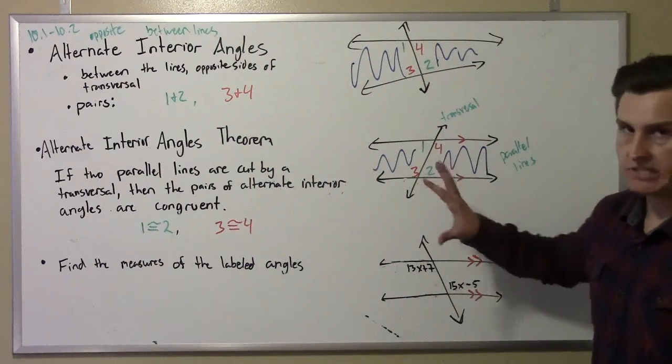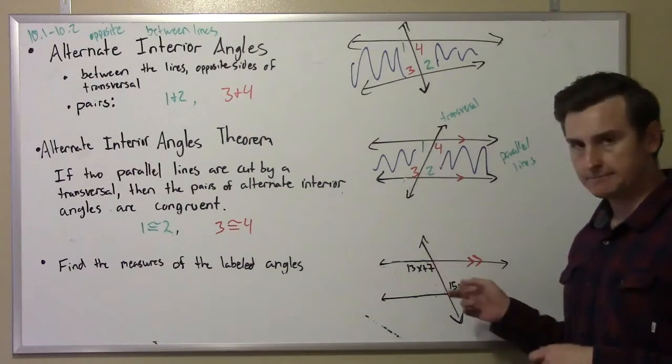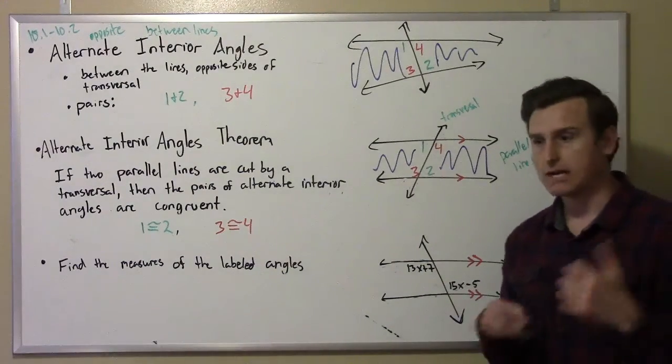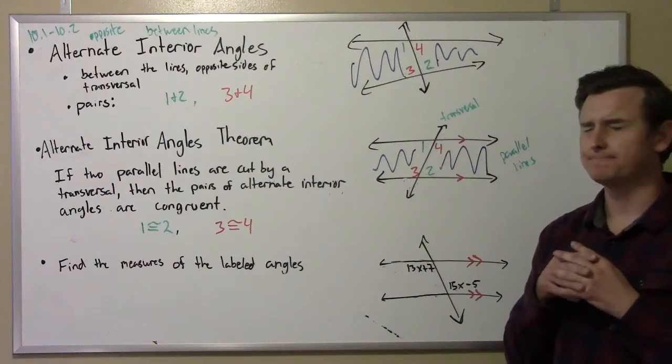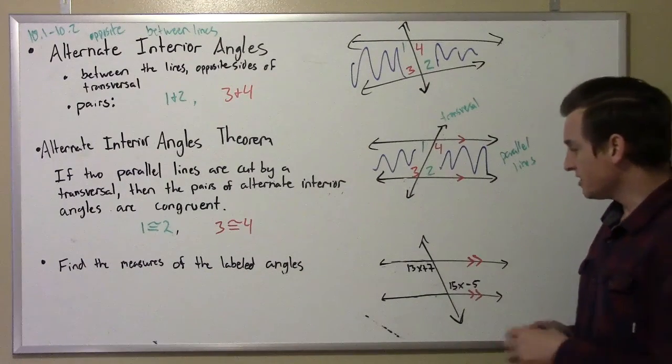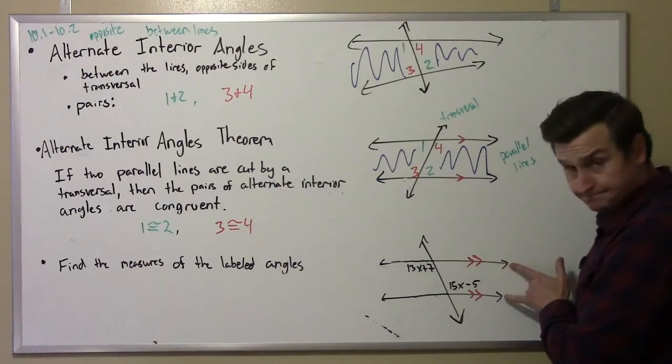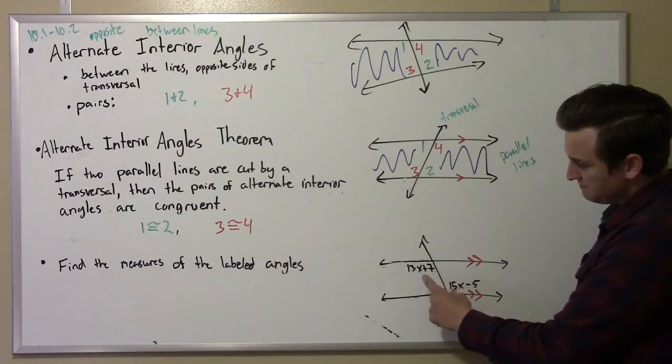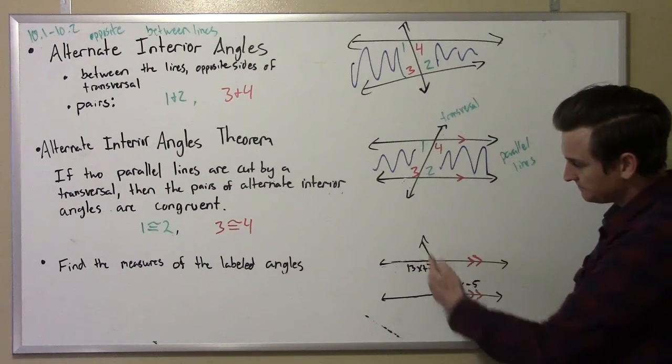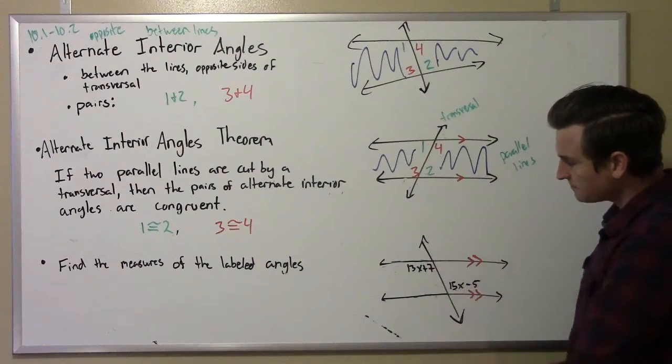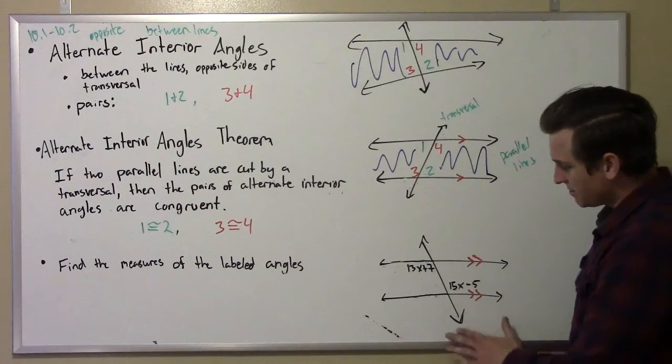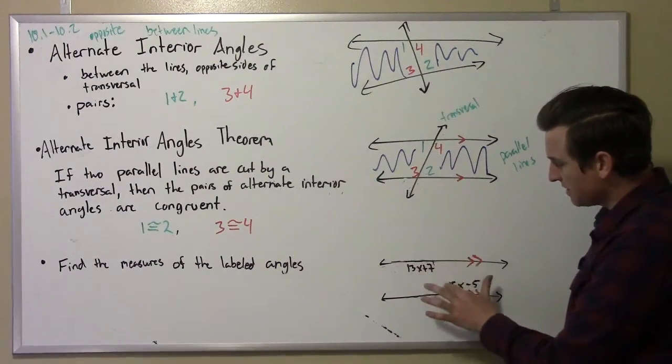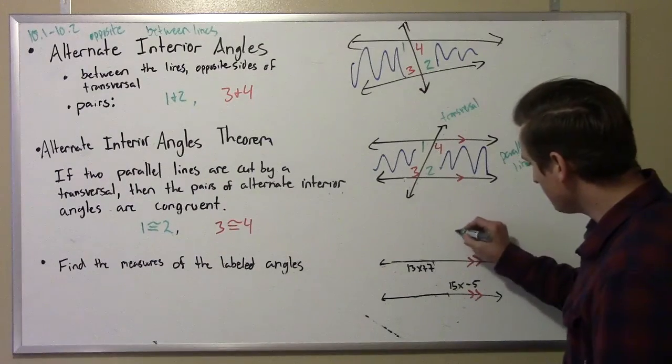What we can do with that piece of information is use it to solve for missing angle measurements, just like we did with vertical angles, linear pairs, and corresponding angles. In this situation, notice that I have two lines that are parallel and cut with a transversal. Let me redraw the transversal so our angles are accurate.